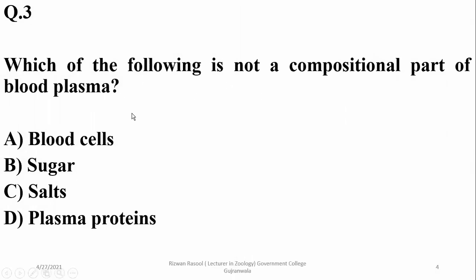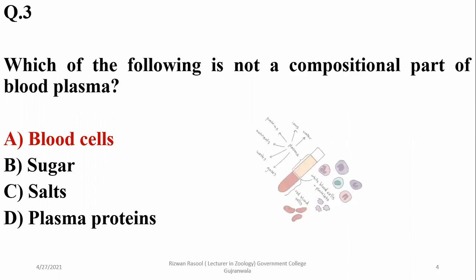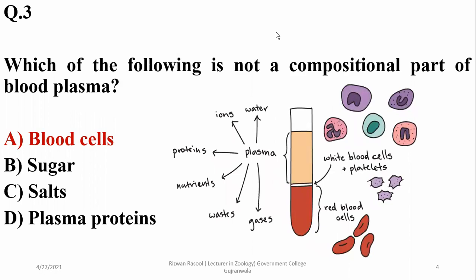Which of the following is not a compositional part of blood plasma? Blood cells are not a compositional part of blood plasma. Instead, sugar, salts, plasma proteins, and water are found in plasma. Blood cells are separated and considered a separate part.